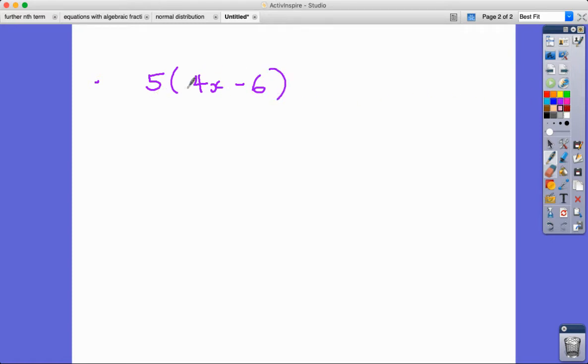So in this one, everything inside this bracket is going to be multiplied by 5. So first of all, 4x times 5, 5 times 4x is equal to, 5 times 4 is 20, 20x. And then the second thing I've got is a minus 6. So 5 times minus 6 is negative 30. There's our answer. Remove the brackets and expanded the brackets.